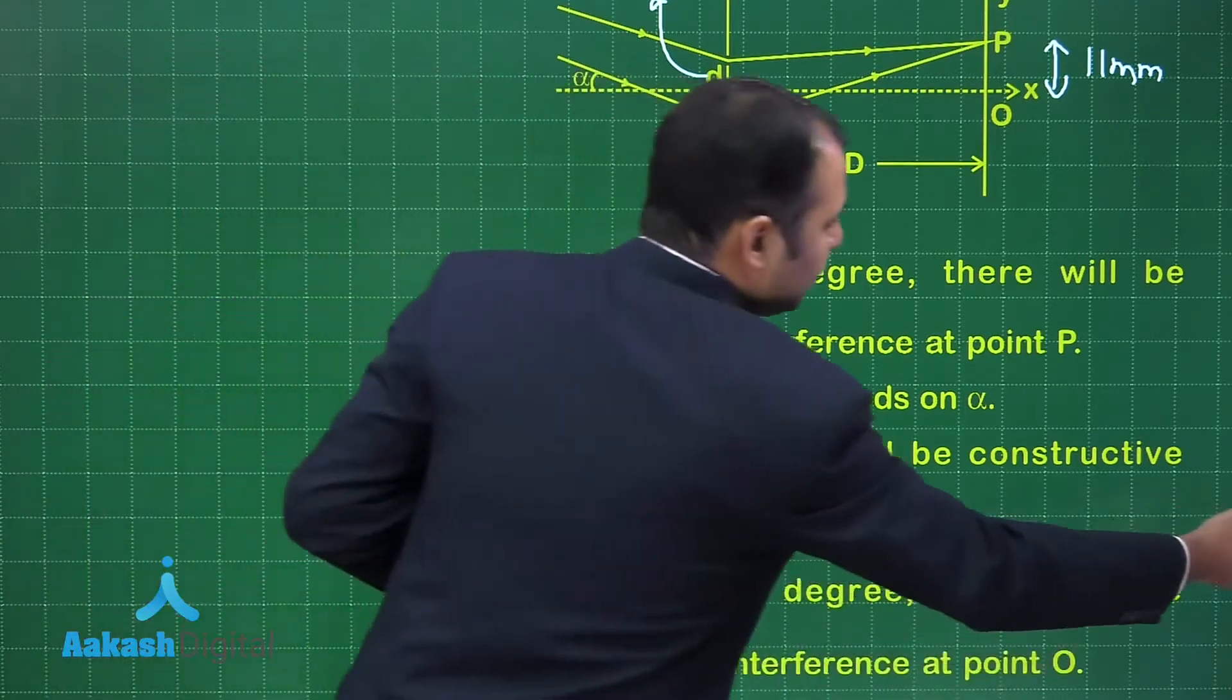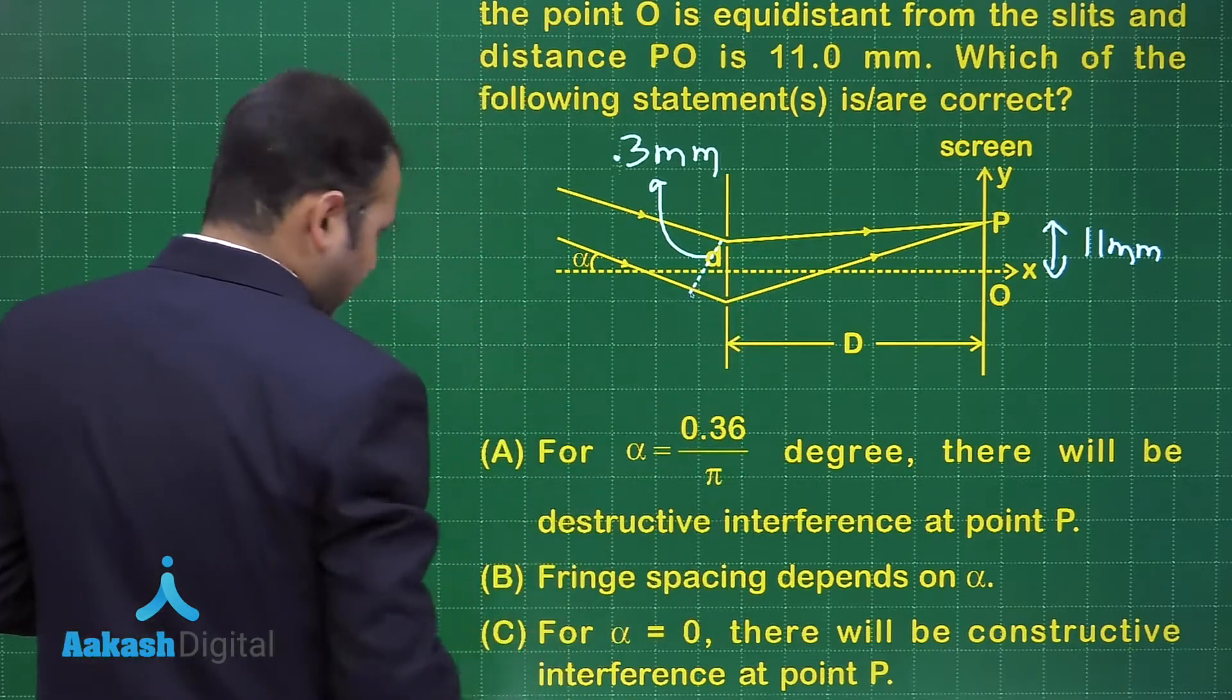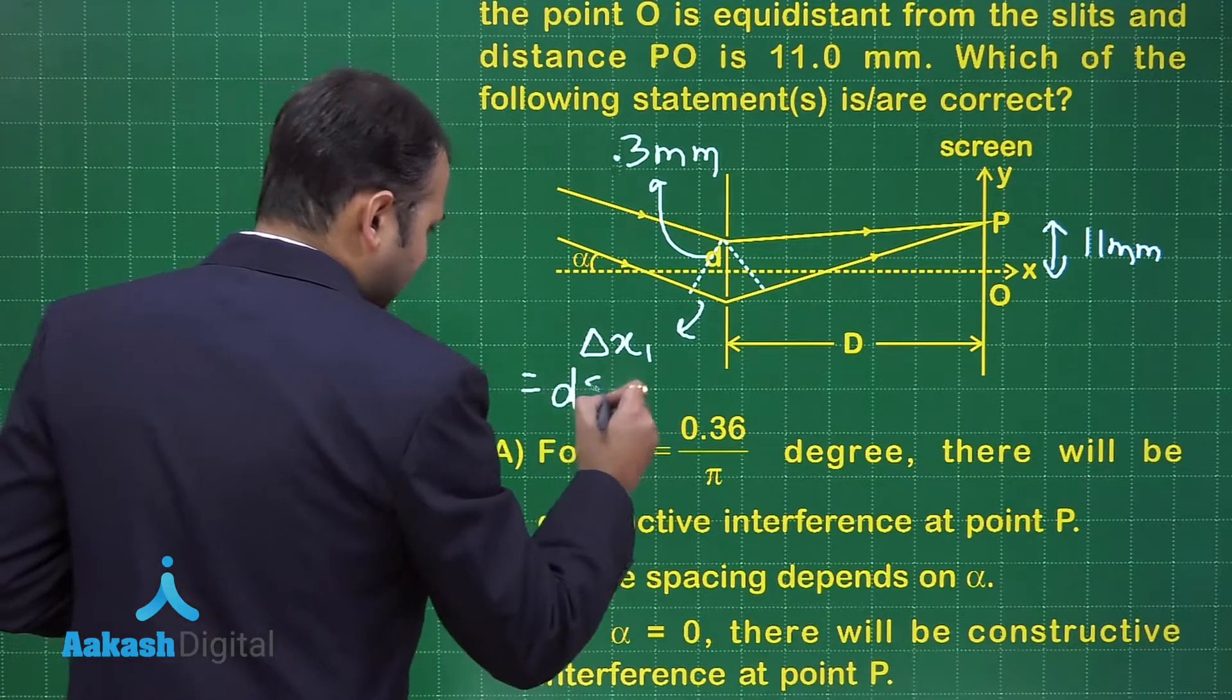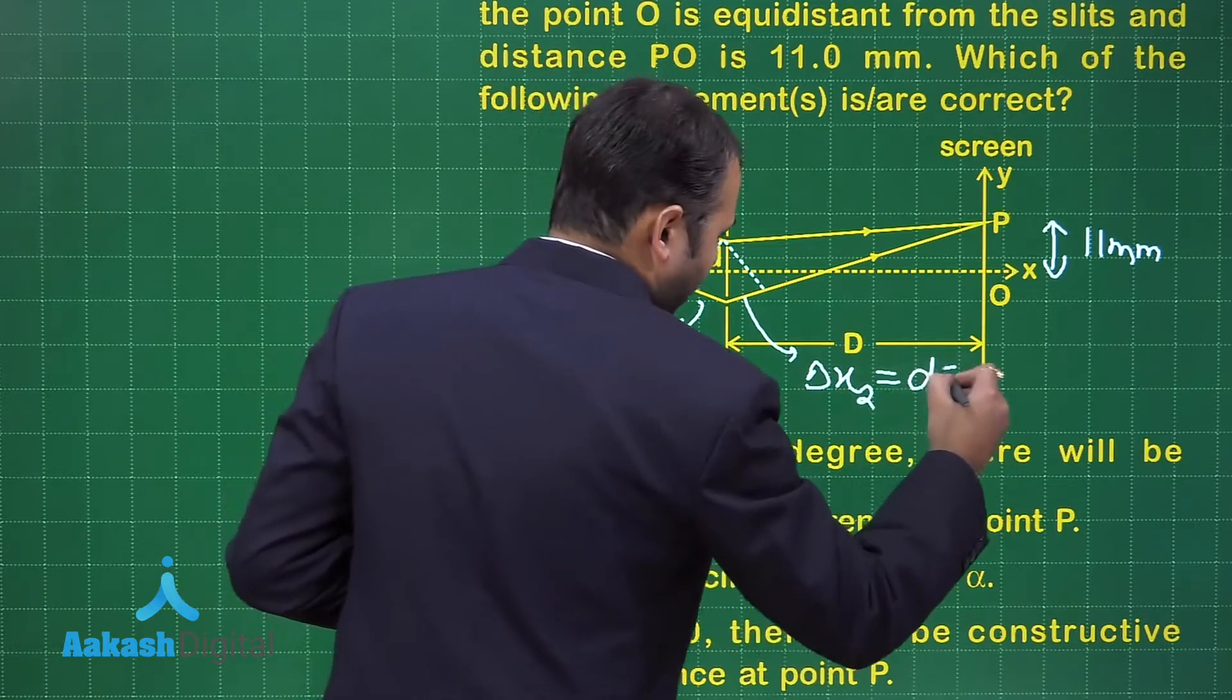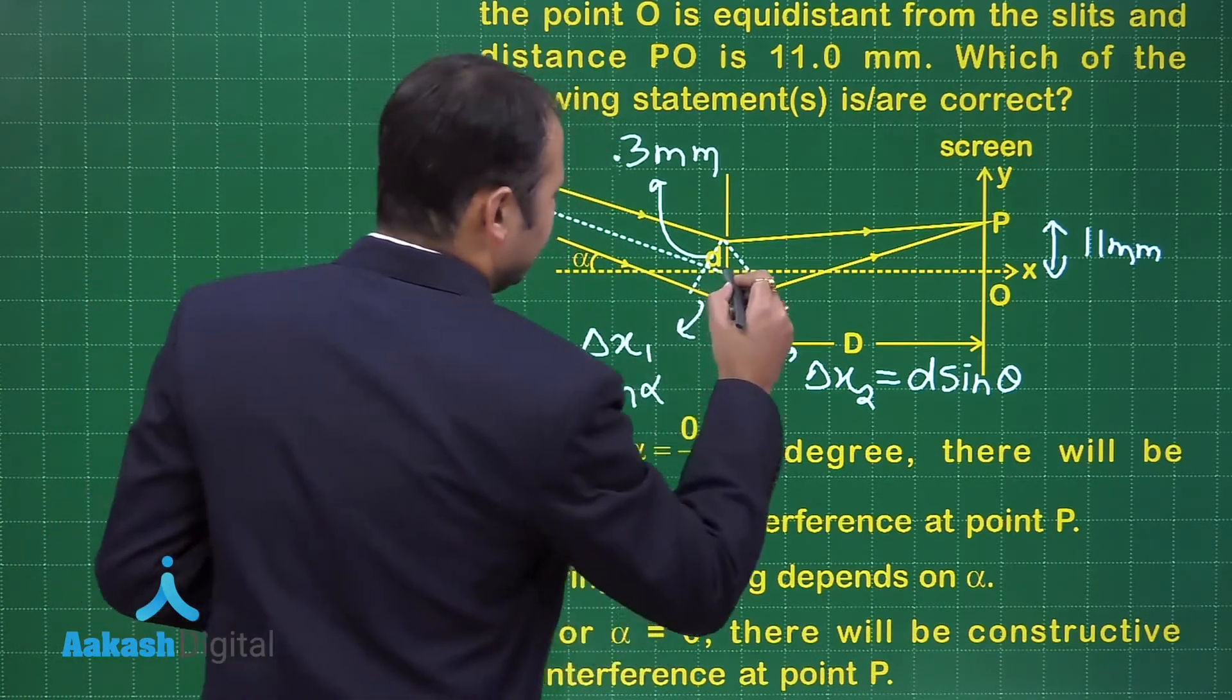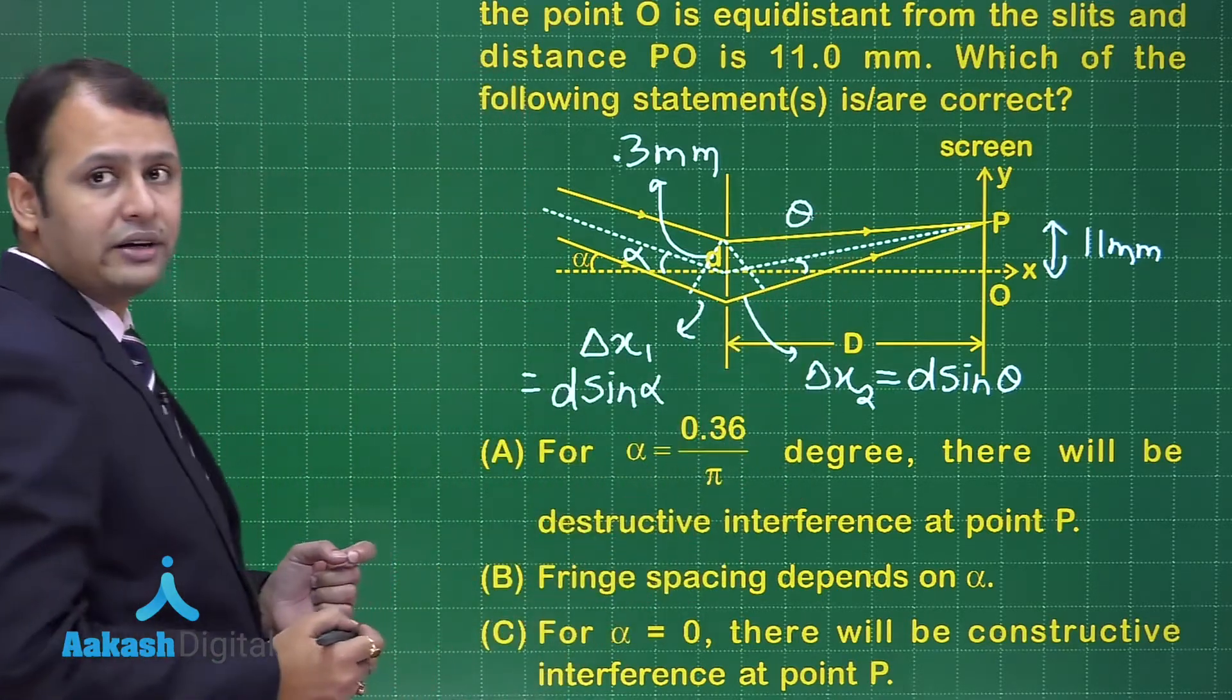Let's talk about point P. When you talk about point P, first you need to understand what is the path difference between the two light rays. If I draw a perpendicular line here and a perpendicular line here, what I will get is delta x1 which would be equal to d sin alpha, and delta x2 will be equal to d sin theta. Where are these theta and alpha?